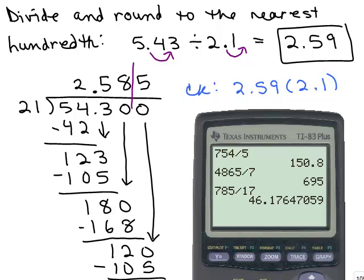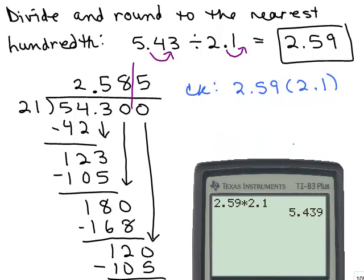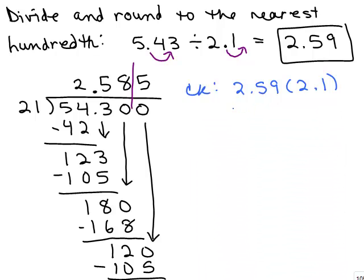I'm going to turn it on, clear it, and I'm going to do 2.59 times 2.1, and I get 5.439. My calculator, I got 5.439, so it's close, so that seems like a reasonable answer. Remember, it's not going to be exact because I rounded my answer.